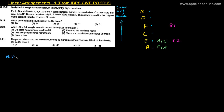Question 19: Which of the following could possibly be C's score? C's score lies between 81 and 62. So 70 — is it possible? Yes. 94 — not possible, it is beyond 81. 86 — not possible. 61 — not possible because it is below 62. 81 — not possible because all six friends scored different marks. So only 70, option one, is correct.